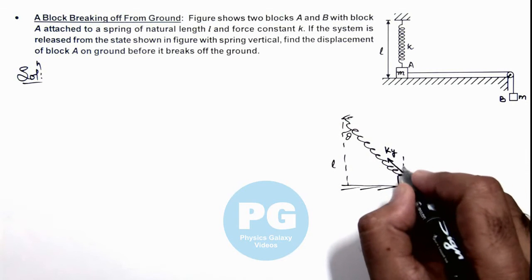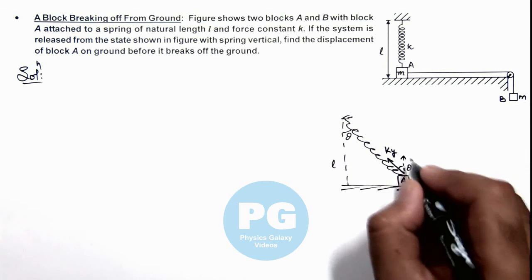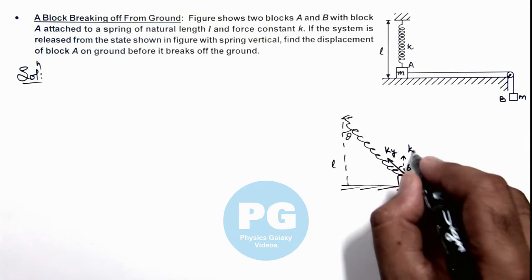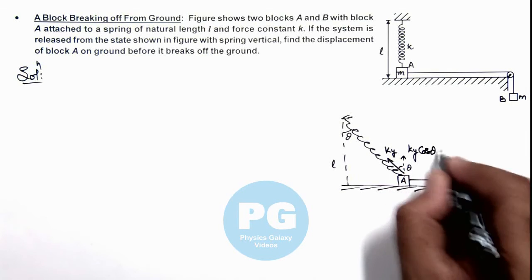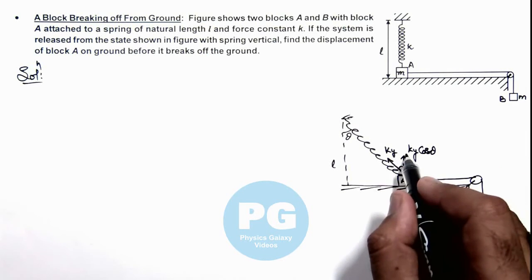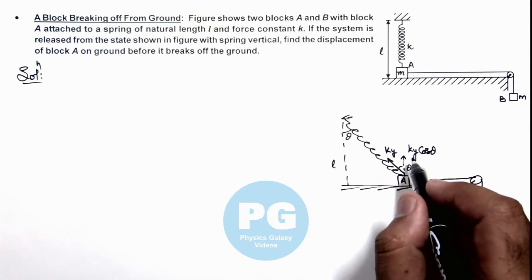Then in upward direction, this angle is theta, the force acting on the block will be k y cos theta. So if k y cos theta becomes more than the weight of this block A, this will break off from ground.